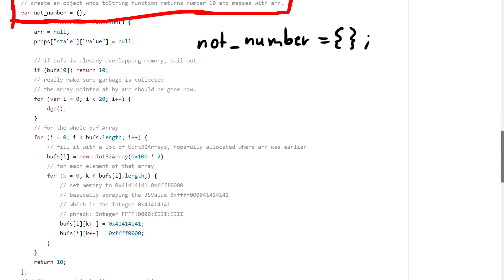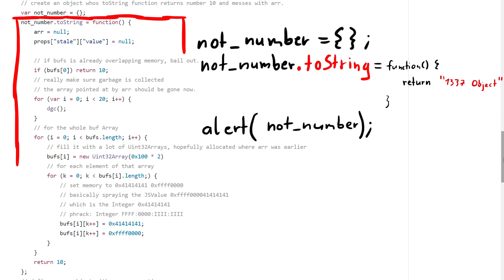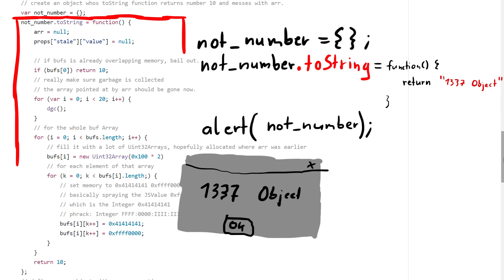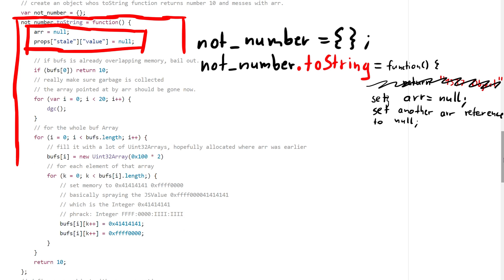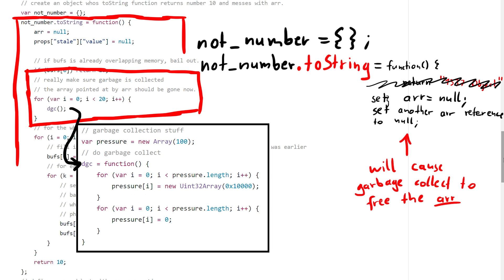Next we create a simple JavaScript object and overwrite its toString function. That function is called whenever you want to get a string representation of that object. In this case the function does a bit more — it first sets the reference to the array we just created to null, as well as setting another property to null. In a second you will see that this stale property is also a reference to the r array. Theoretically now all references of the array are gone, and the garbage collector can free that array. To force the garbage collector to kick in right now, we can use a function which just allocates and removes a lot of objects, and when you do this a couple of times you can be fairly certain that the garbage collector did some work.